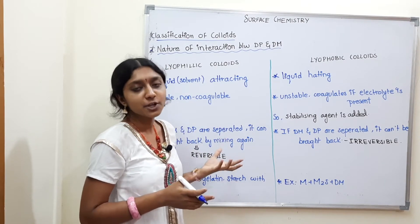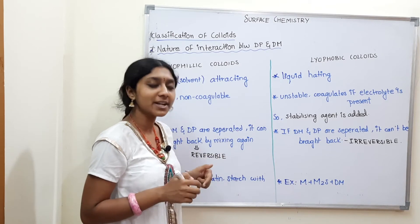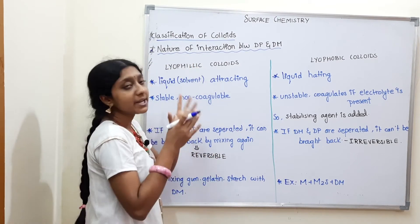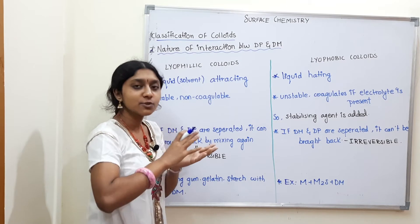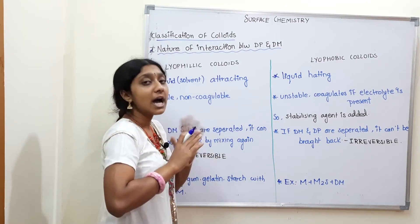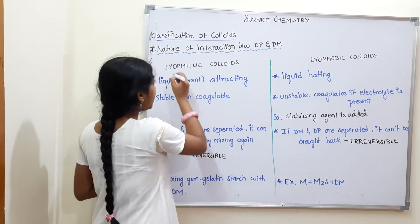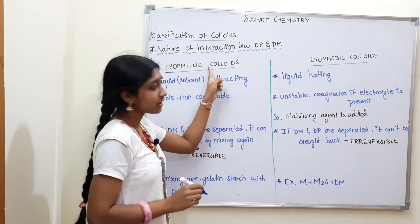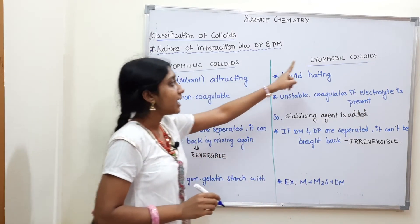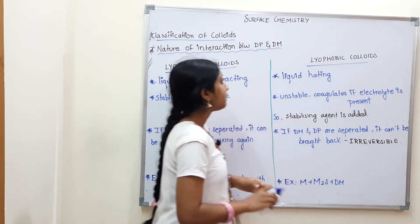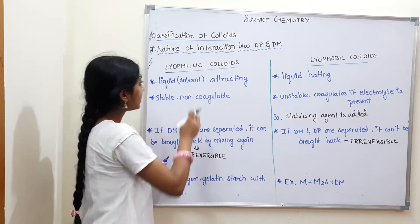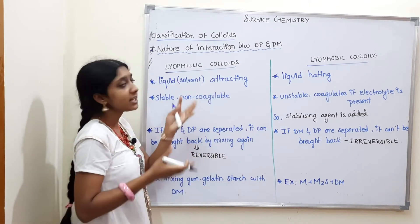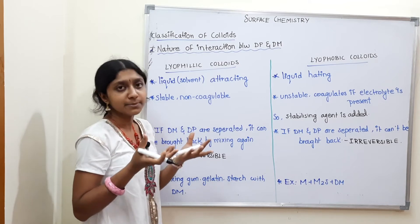In the previous video — please check the link in the description. Based on interaction between dispersed phase and dispersed medium, there are two types of colloids. The first is lyophilic colloids. 'Lyo' means liquid — that is, the dispersed medium — and 'philic' means attracting. So lyophilic means attracting the dispersed medium.